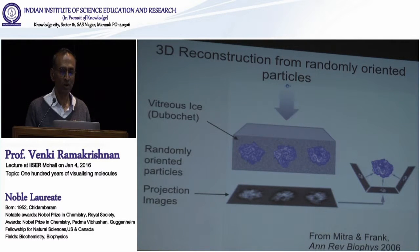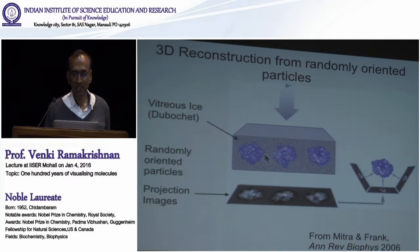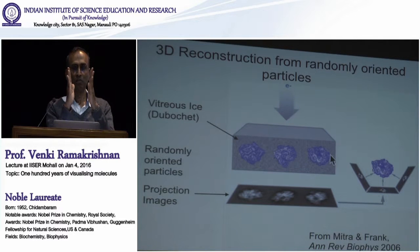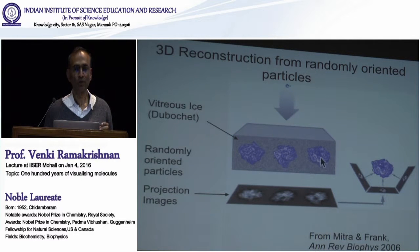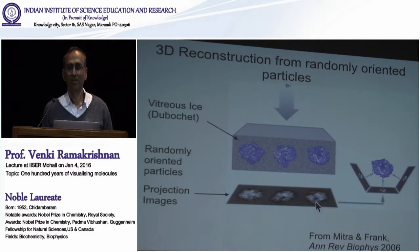The way around both of these problems was a method called the single particle reconstruction method. In that method, you take your sample in an aqueous solution and blot away the sample so that only a very thin layer is left — only a few hundred angstroms thick. Inside that layer, these molecules can be in random orientations. So when you do the experiment, you get images that are different projections of the same molecules. The problem is you don't know what these orientations are to begin with.